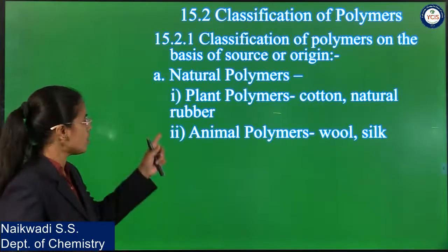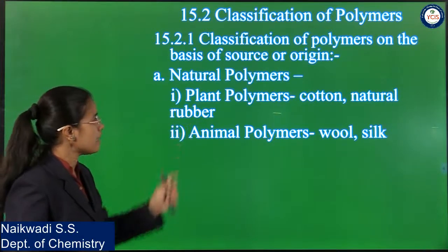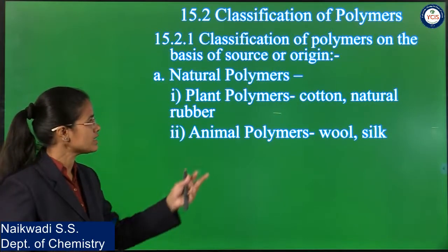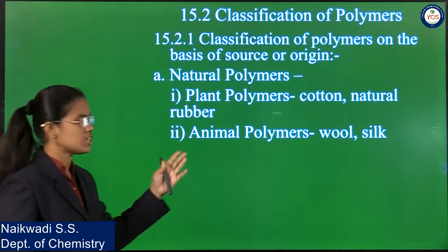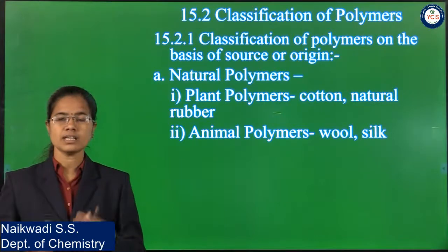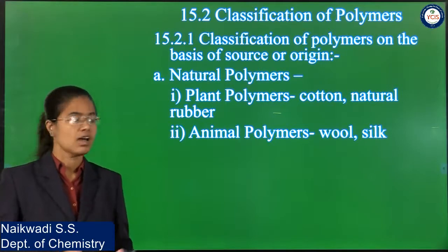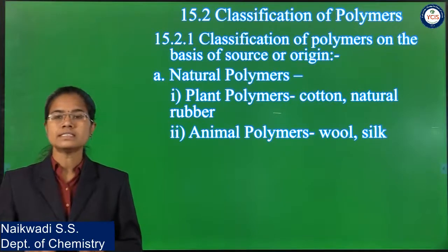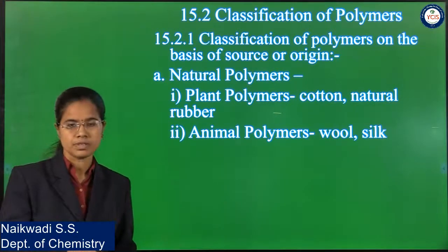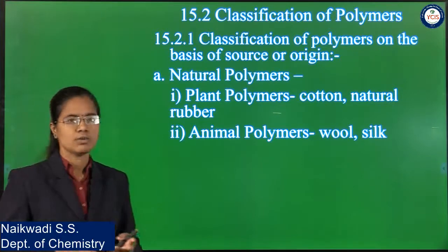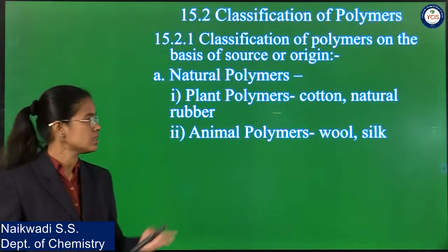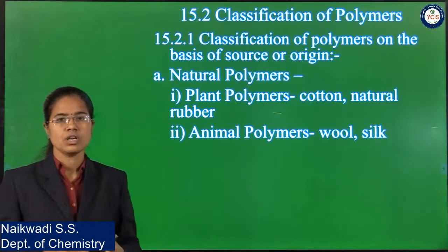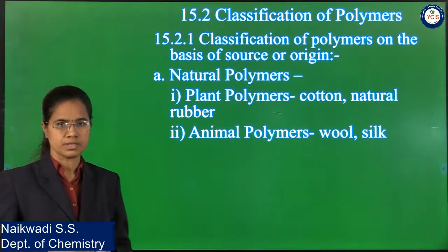For example, the first types are plant polymers and animal polymers. Plant polymers include cotton and natural rubber — their sources are plants. Animal polymers include wool and silk. Wool is obtained from the hair of sheep, and silk is obtained from silkworms. So they have sources from nature, and that is why these are called natural polymers.